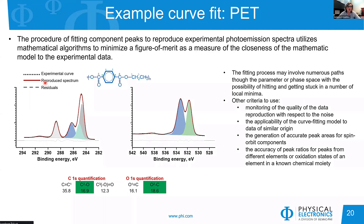At the end, when we've fitted our spectra, we have carbon 1s and oxygen 1s fitted. Depending on how you start your fit — the starting selection of peaks, number, position, width, etc. — you may end up at a different model, in a different local minimum. We have to be careful and use other criteria beyond chi-square to judge the quality of a curve fit.